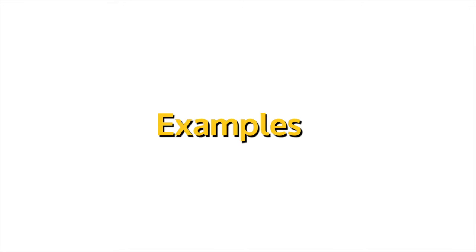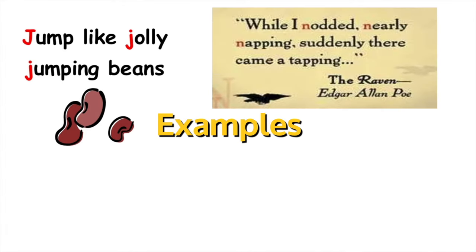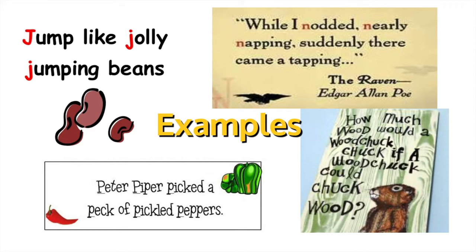Let's look at some examples. 'Jump like jolly jumping beans' — jump, jolly, jumping. 'While I nodded, nearly napping, suddenly there came a tapping' — from The Raven by Edgar Allan Poe. We have W repeated three times and then C repeated three times. 'How much wood would a woodchuck chuck if a woodchuck could chuck wood?' And then 'Peter Piper picked a peck of pickled peppers' — P is repeated six times.